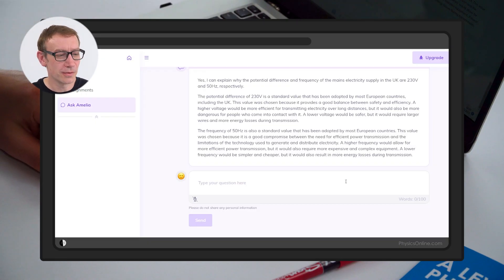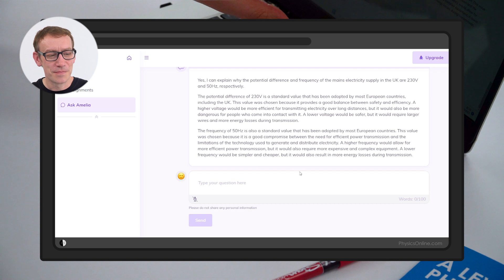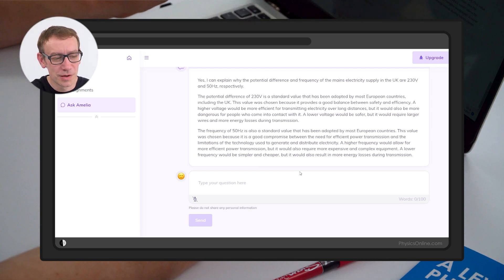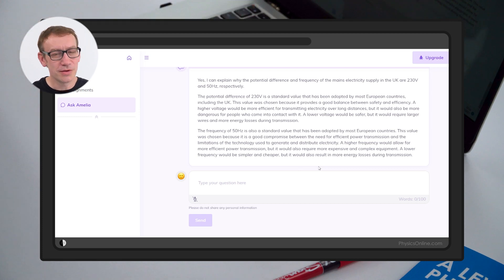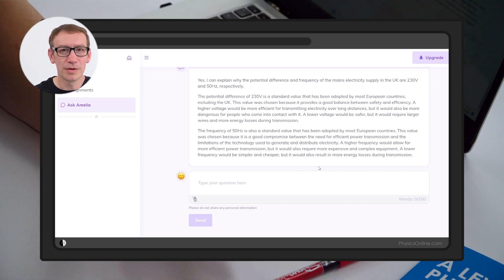Now, of course, the real advantage of AI isn't just giving those answers. You can find those in the mark scheme. The advantage is that if you ask it to explain why it's those answers, it can actually give you a bit more information than the mark scheme would ever have. So why do we use 230 volts? Well, it tells you here in the massive paragraph. Why do we use 50 hertz? Why don't we have a higher or a lower frequency? Again, it gives you information there that goes well beyond the mark scheme, and that can really allow you to have a deeper understanding of that part of the subject.